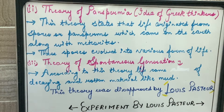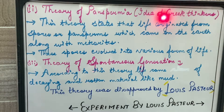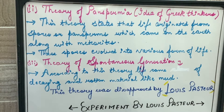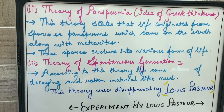The next theory of evolution is the theory of panspermia, also known as the theory of Greek philosophers because it was given by Greek thinkers. This theory states that life originated from spores, also called pansperms, which came to the earth along with meteorites, and these spores then evolved into various forms of life.